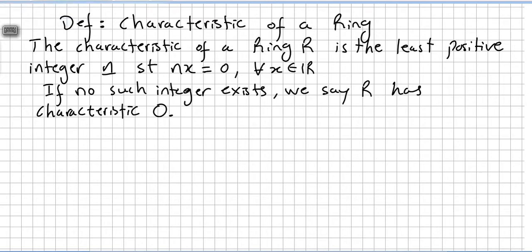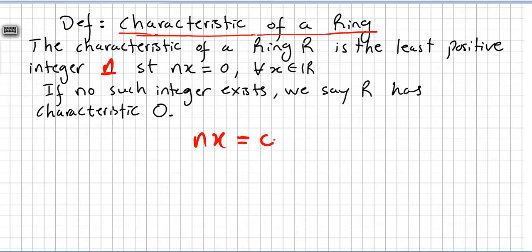In this video we introduce a new concept: the characteristic of a ring. We begin with the definition. The characteristic of a ring R is the least positive integer n such that nx equals 0 for all x in the ring. If no such integer exists, we say the ring has characteristic 0.